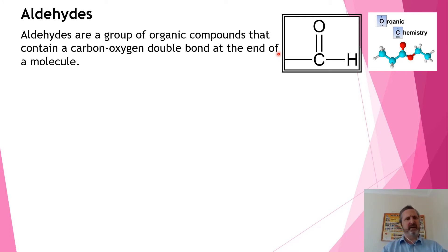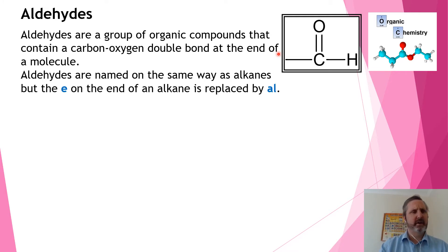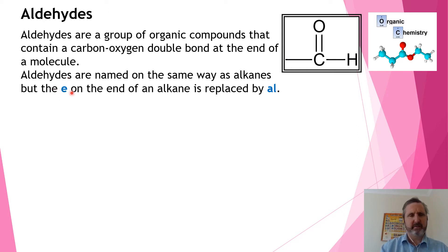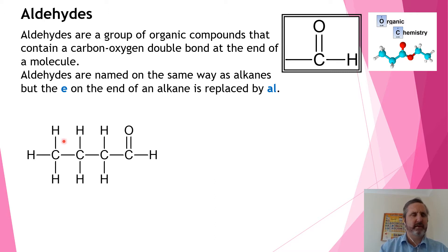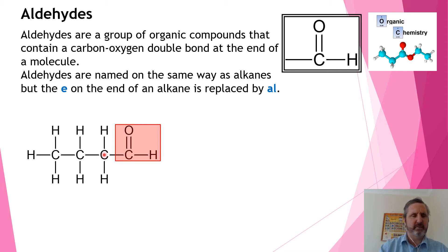When we want to name aldehydes, we take away the E on the end of the alkane and replace it with AL. Here's an example. The functional group at the end is the aldehyde functional group — notice it only has one bond left to join. It's on the end of this butane chain, so this is called butanal.